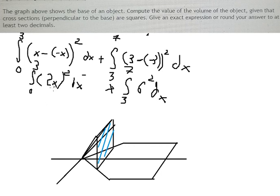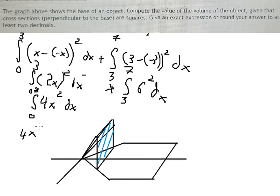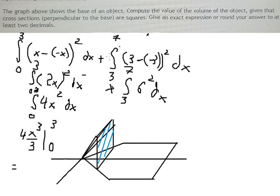We integrate 4x squared to get 4 times x cubed over 3, evaluated from 0 to 3. We put in 3 and then 0. The final answer for the first integral is 36.